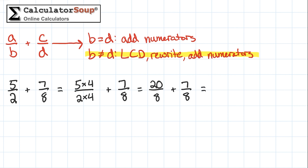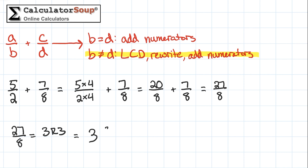20 plus 7 is 27, so our answer is 27 eighths. Let's simplify this fraction to a mixed number. 27 divided by 8 is 3 remainder 3, so put 3 as the new whole number result and 3 as the new numerator over 8. Our simplified answer is 3 and 3 eighths.